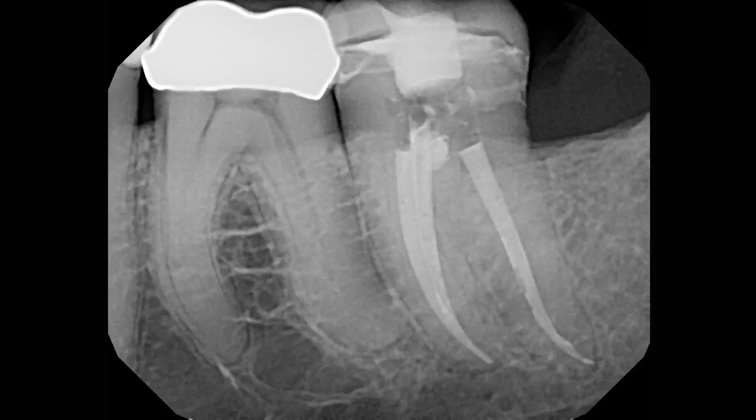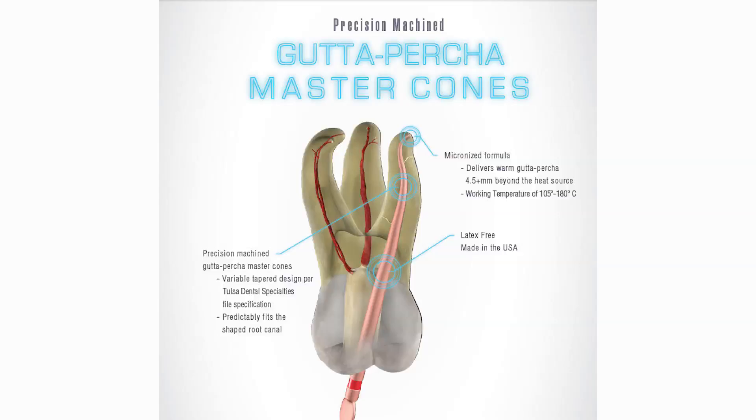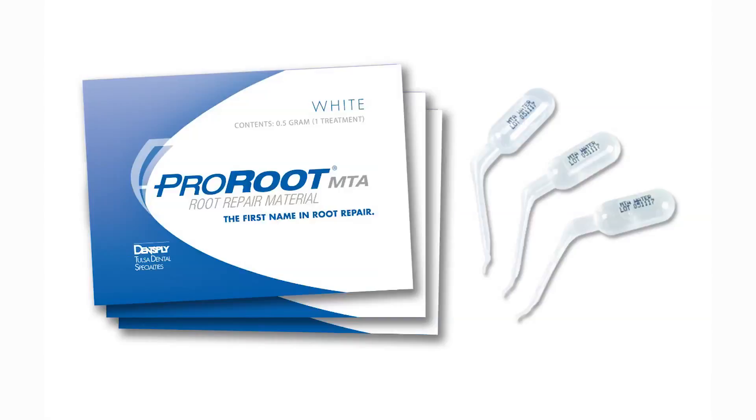The two canals in the mesial root joined at the root apex to exit a common foramen. These canals were filled to the coronal one-third of the root with gutta percha, and ProRoute MTA was placed in the mesial canal opening to ensure a seal. There was no evidence of a communication with the oral environment through the internal resorption.